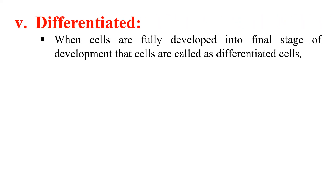The next term is differentiation, or a differentiated cell. When a cell is fully differentiated into the final stage of its development — meaning after that stage it will not change into any other form — that cell is known as fully differentiated. After that stage it will not change into any other cell, tissue, or organ, so that is known as a differentiated or fully developed cell.